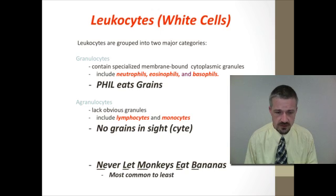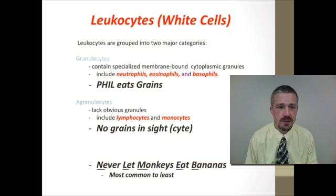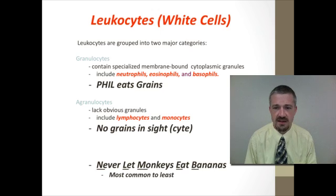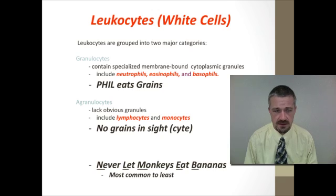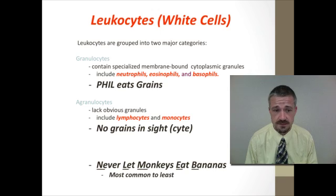The leukocytes are grouped into two main categories: those which have cytoplasmic granules in the cells, which we call the granulocytes. These include neutrophils, eosinophils, and basophils.